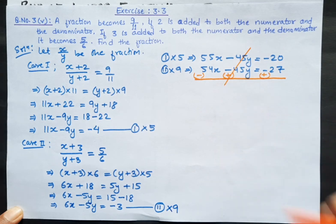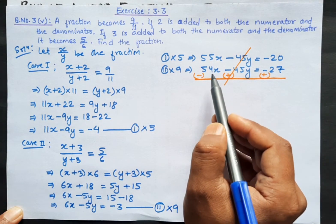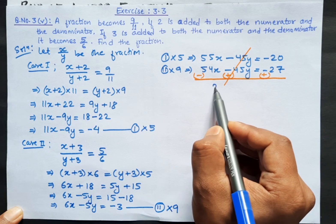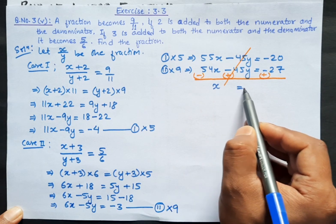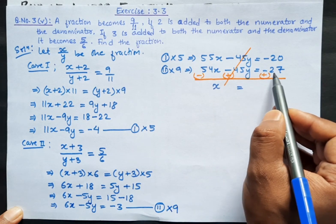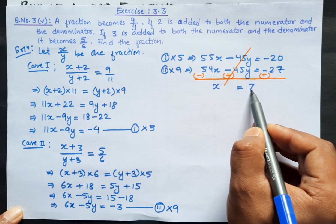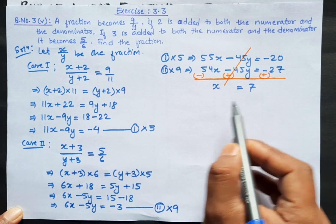Since the y coefficients are both 45 with the same sign, we subtract. The y terms cancel: 55x minus 54x gives x equals minus 20 minus minus 27, so x equals 27 minus 20 equals 7. So the value of x is 7.